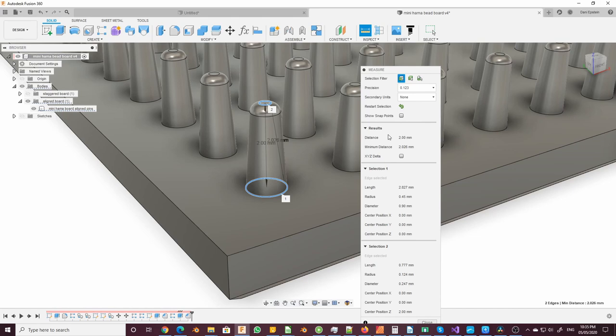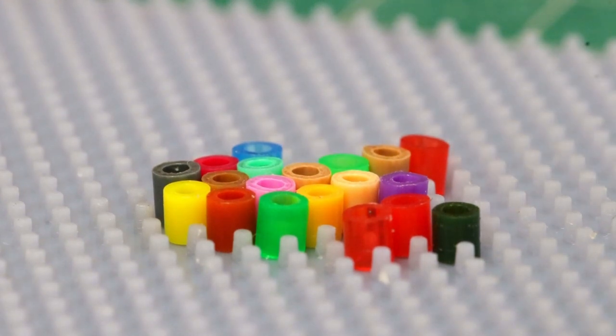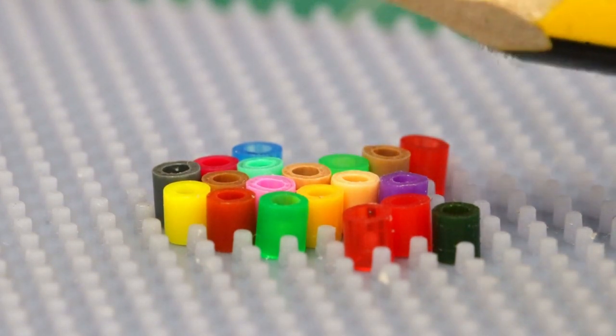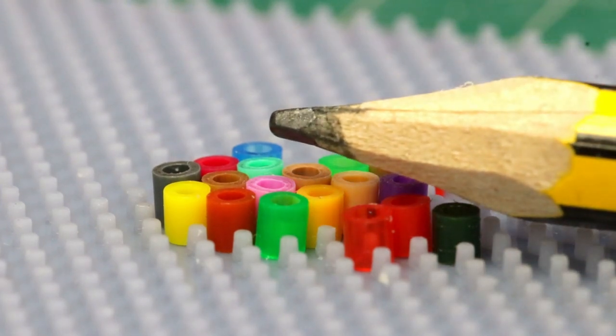And that's because the technology this printer uses is called stereolithography. And that allows for printing details so fine, the feature size, i.e. the smallest possible size of anything that you could print with it, is 47 microns.